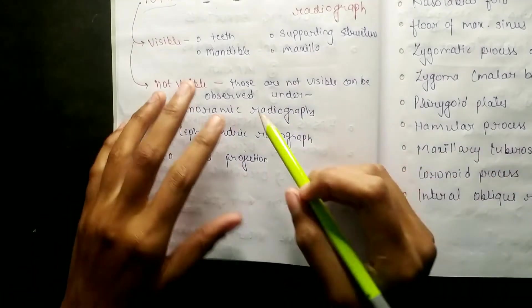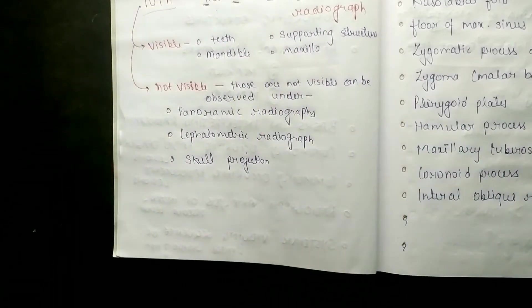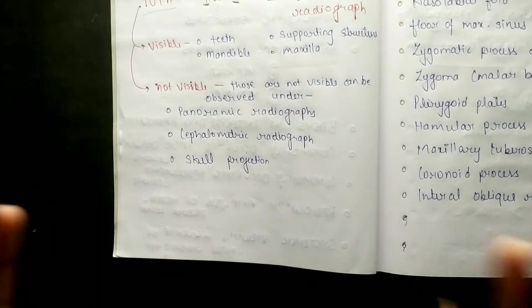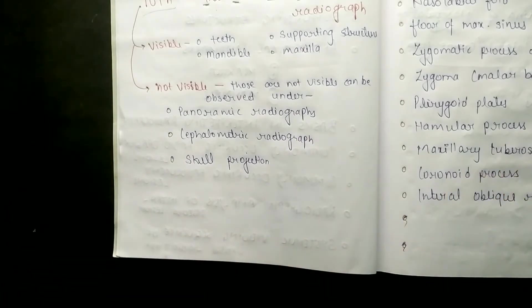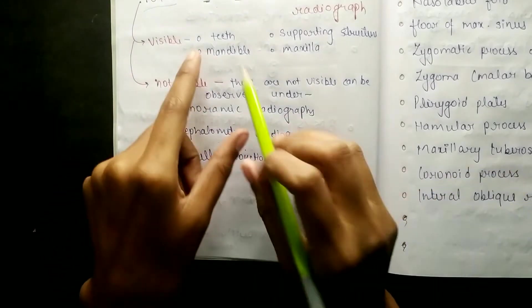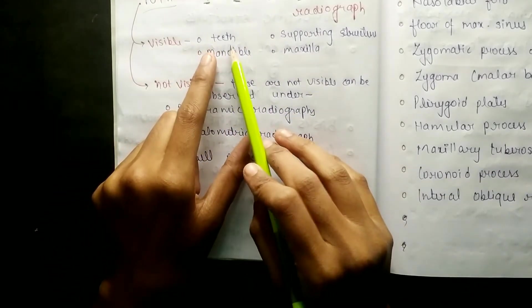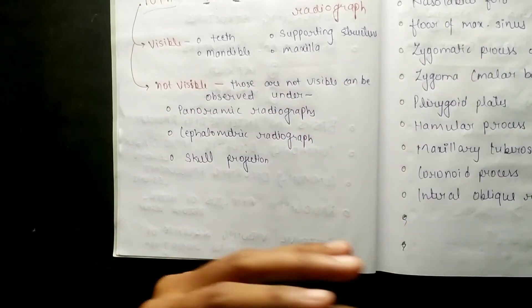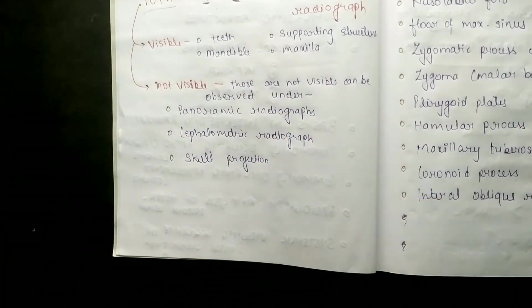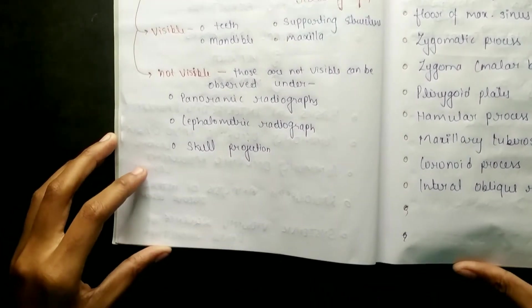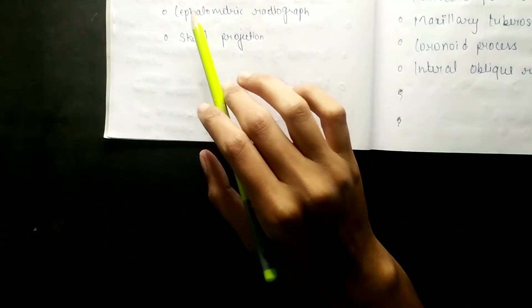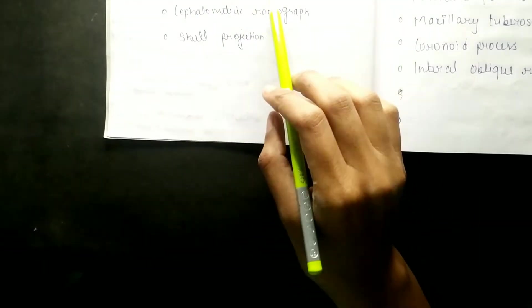In the IOPA, teeth are visible, supporting structures - mandible and maxilla - are visible on the x-ray film. Going forward, we will study how to identify structures in the tooth, which structures in the supporting structures are radiopaque and which are radiolucent, how to view mandible and maxilla landmarks. For structures not visible on IOPA, we can use other techniques like panoramic radiograph, cephalometric radiograph, and skull projections.